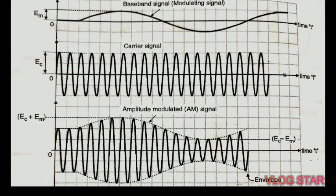Amplitude modulation (AM) is the technique of modulation in which the instantaneous amplitude of a carrier signal is varied in accordance with the amplitude of the modulating signal. From the figure it can be seen that the frequency of the carrier remains unchanged in the process of amplitude modulation. Now we are going to represent the AM signal mathematically.